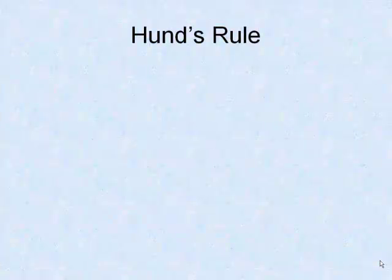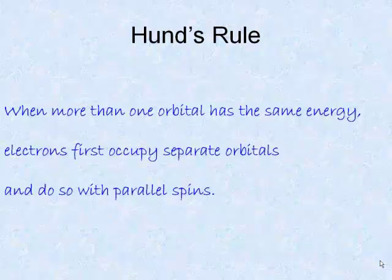The way in which we arrange electrons in the atom is also dependent on Hund's rule, which states that, when more than one orbital has the same energy, electrons first occupy separate orbitals, and do so with parallel spins. Let us examine what this means.